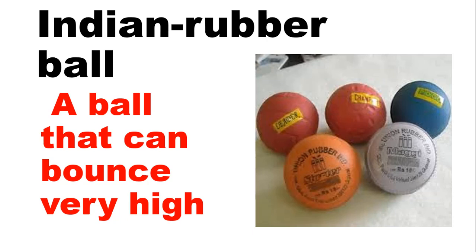So let's see the meaning of this word. An Indian rubber ball is a ball that can bounce very high. Whenever we throw the ball, it starts bouncing. Here you can see this picture — little balls are shown. You must have seen these balls in real life also. So these balls are called Indian rubber ball.